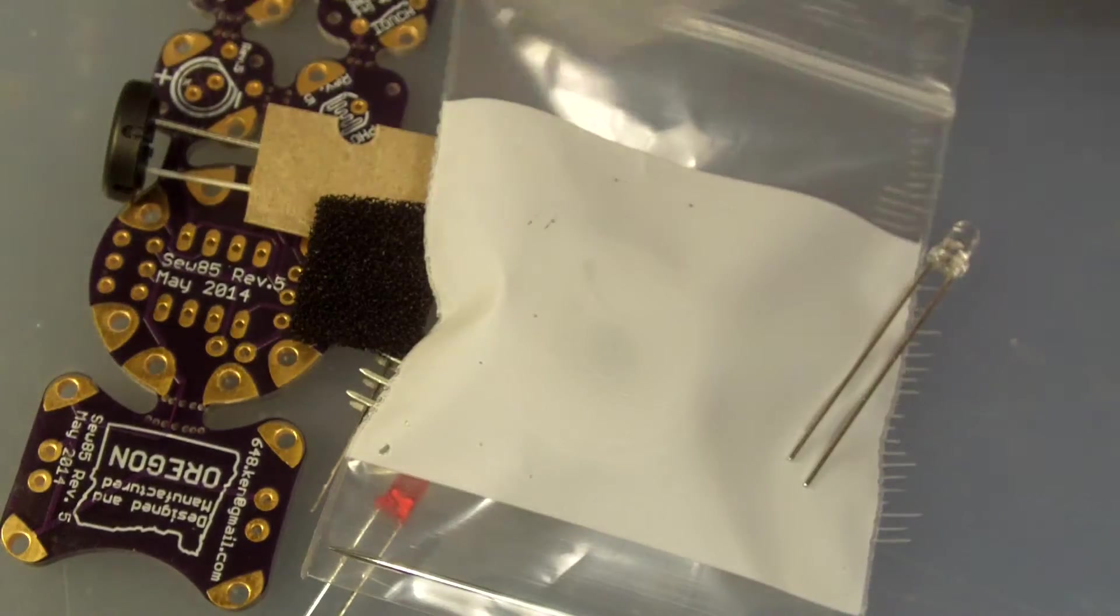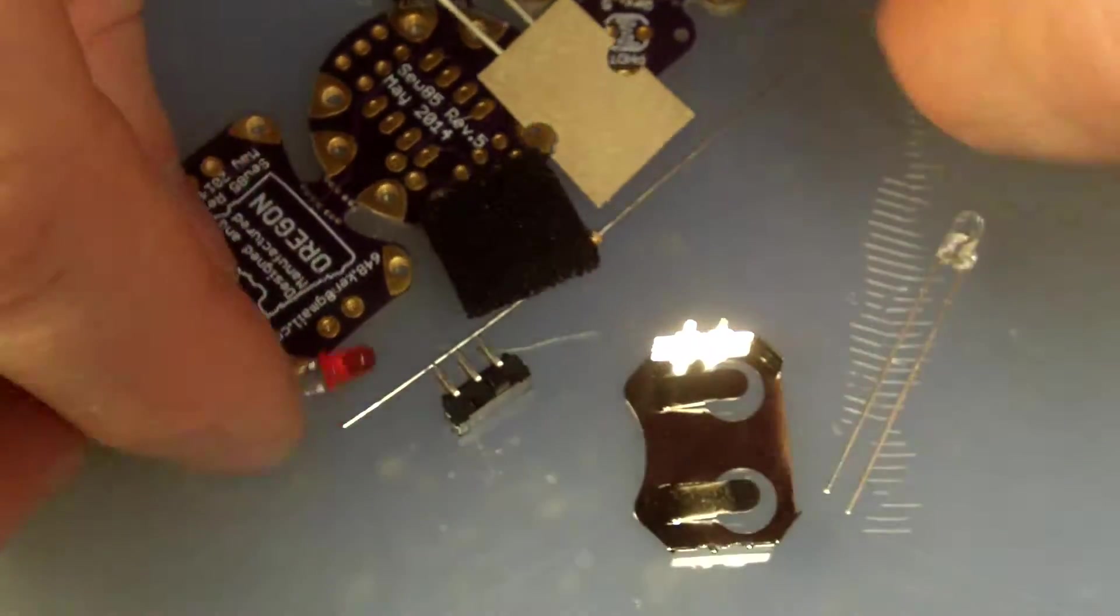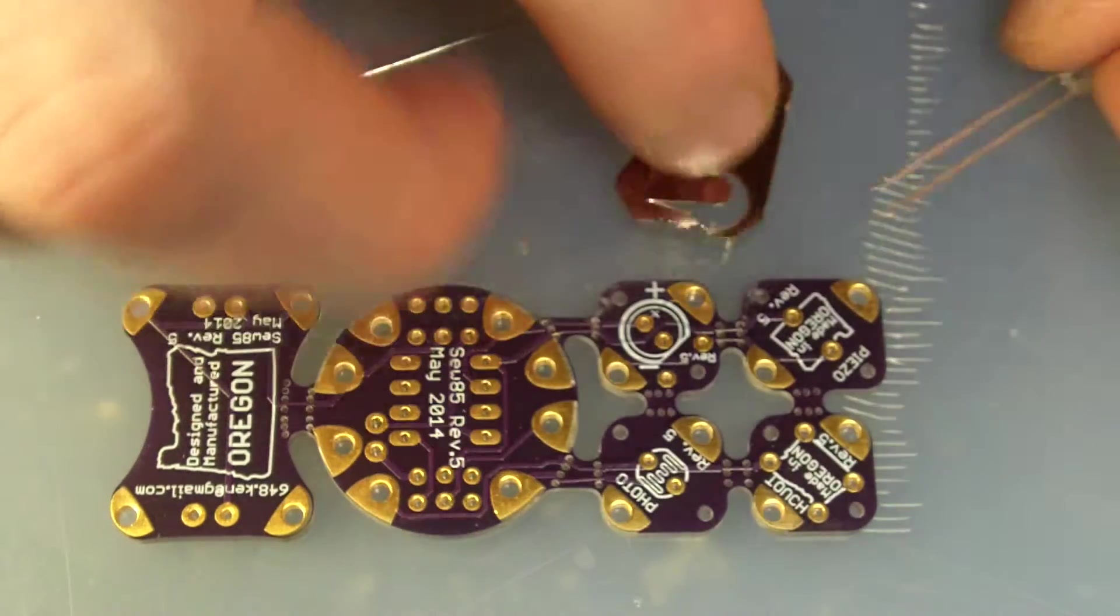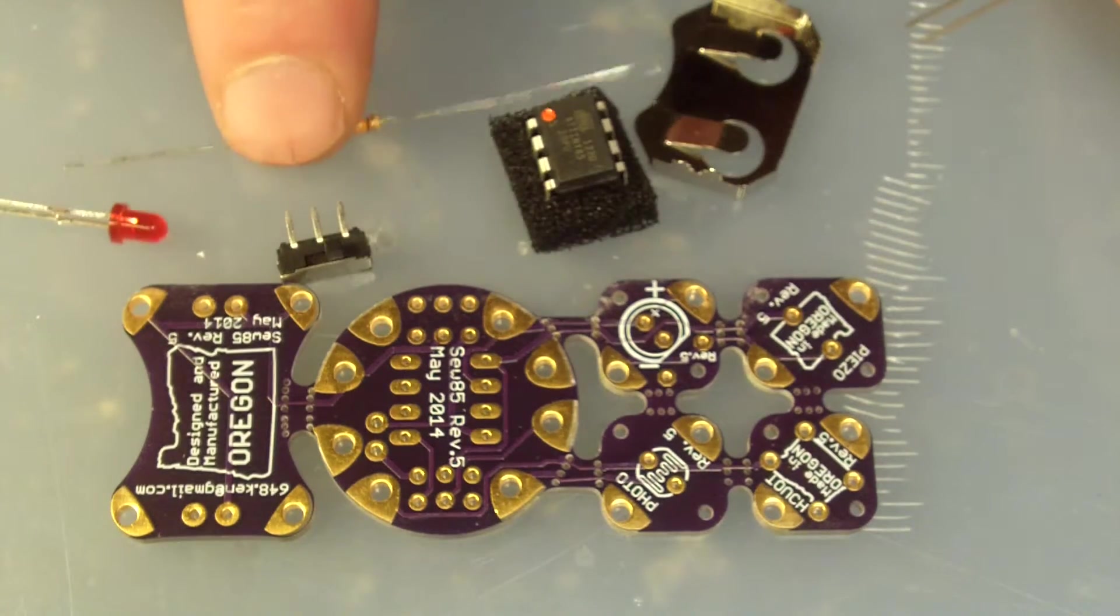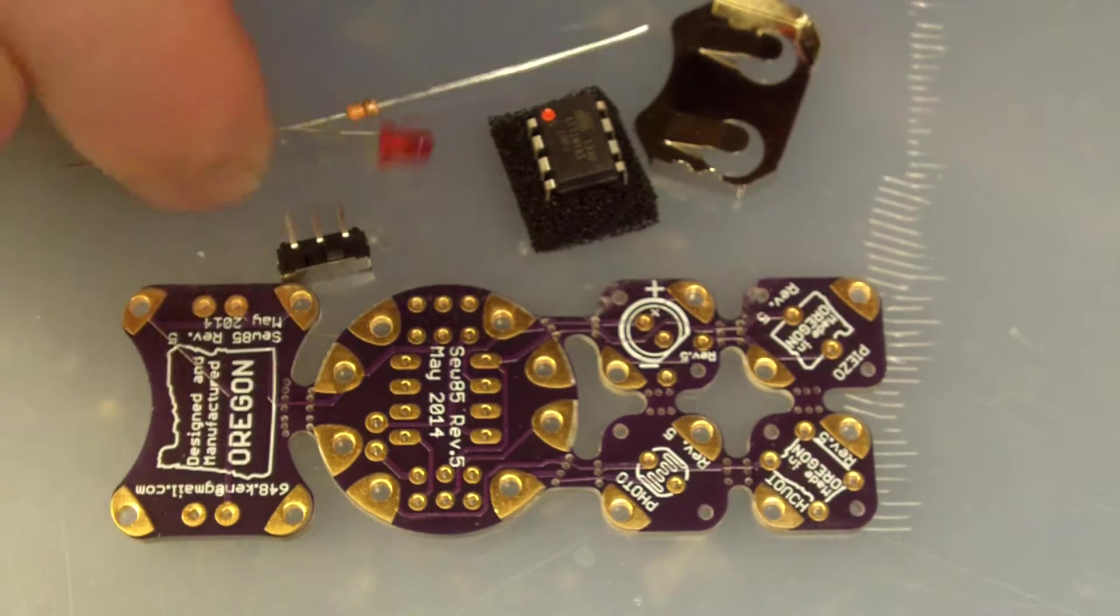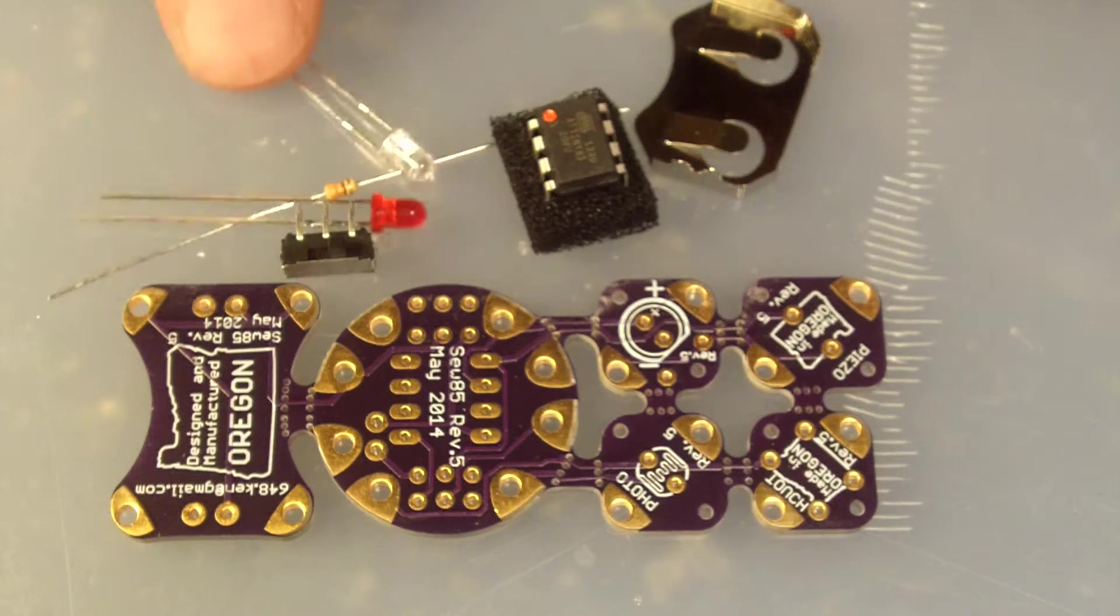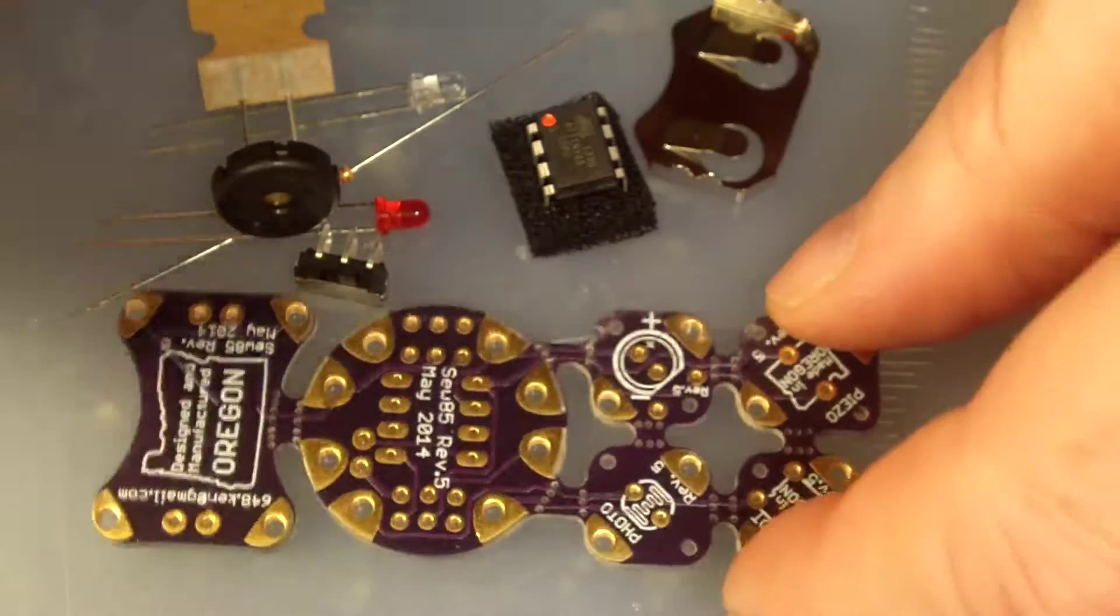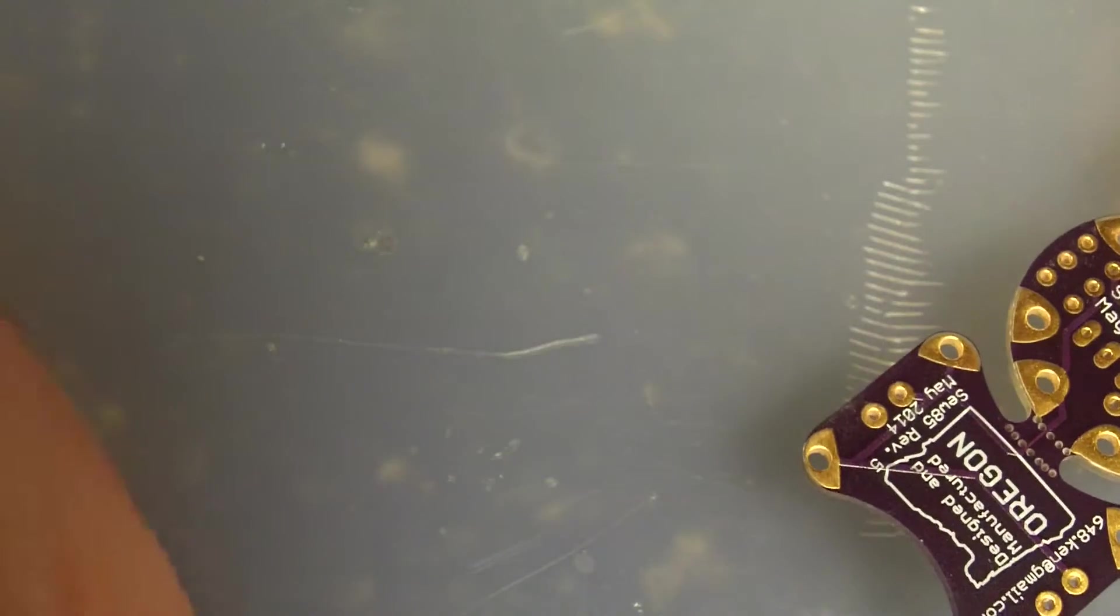First thing I'm going to show you is how we solder it together. Let's make sure you've got all your parts: conductive thread and needle which we'll use later, circuit boards, battery holder with pre-programmed chip, a resistor, the LED, switch, the light sensor, and your speaker. We've got everything we need.